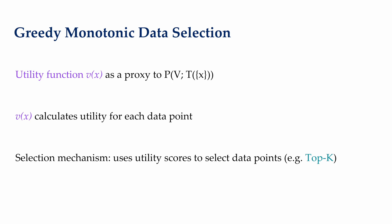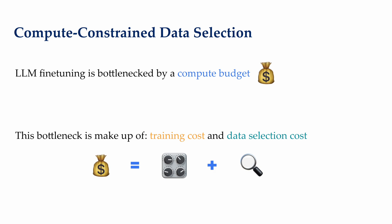Because we impose the two aforementioned assumption that is assuming modularity in our data and having well correlated validation set, the two-step greedy algorithm is justified to solving this optimization problem. Specifically, this is a form of greedy monotonic data selection. First, to estimate the marginal contributions of individual training point X, most data selection methods in LLMs uses a utility function V of X to calculate a utility for each training data point X. Second, you have a selection mechanism where you use that score, you rank all the data points in that training set, and select those that maximize the total utility within the data budget K.